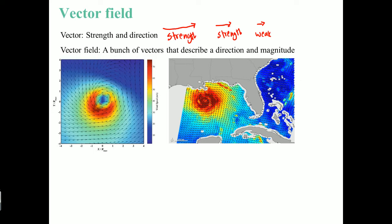A vector field is when you have a bunch of vectors each with a direction and a magnitude. To use it, you look at certain areas. You can say this vector field here is going in this direction because all those vectors are pointing that way. And right here, all the vector fields are going up. But if you look at it overall, you would see that the vector field is circulating or converging to this point right here.